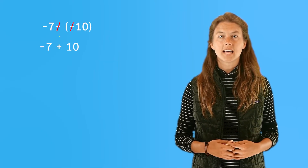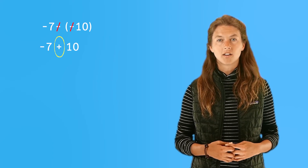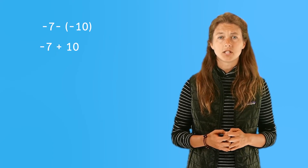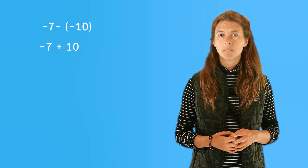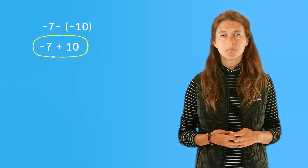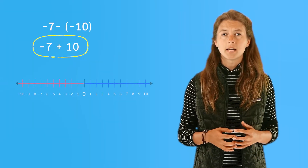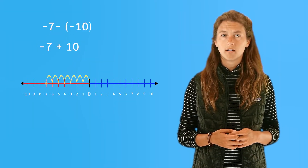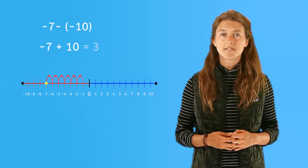Let's try one more: negative seven minus negative ten. Take the original subtraction sentence, rewrite it by changing it to an addition sentence, and change the sign of the ten to a positive ten. Remember, we do not need to put a plus sign in front of a positive integer, but it does help. It should look like this: negative seven plus ten. Then solve it using the number line like before. You should end up on positive three.